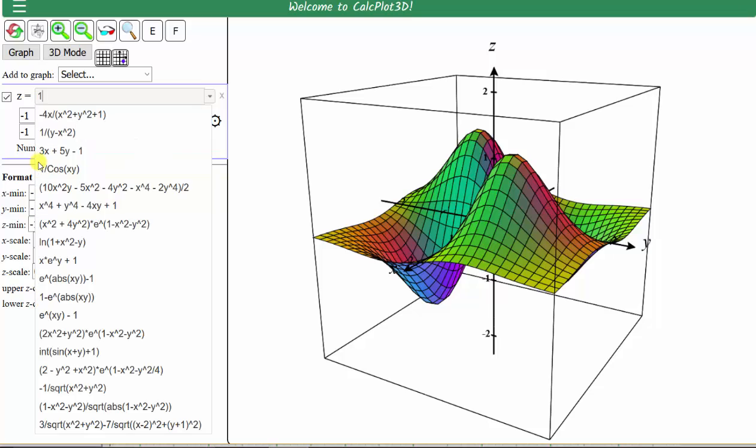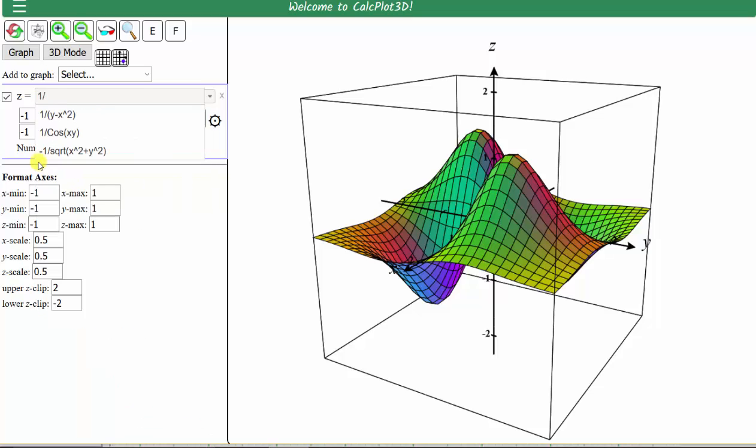Our second function is f of x comma y equals one divided by the quantity one plus x squared plus y squared, which must be in parentheses in the denominator.